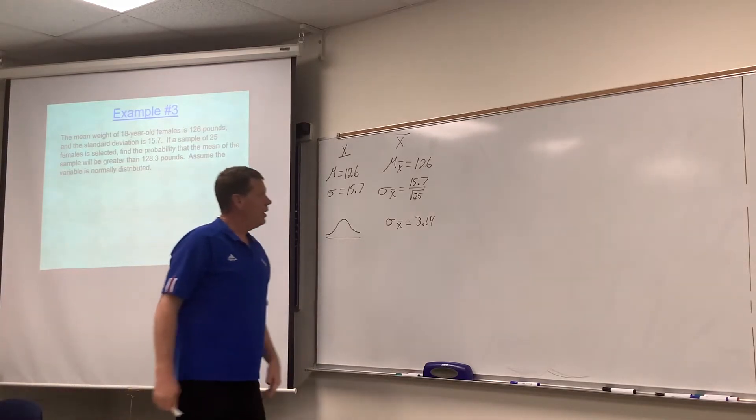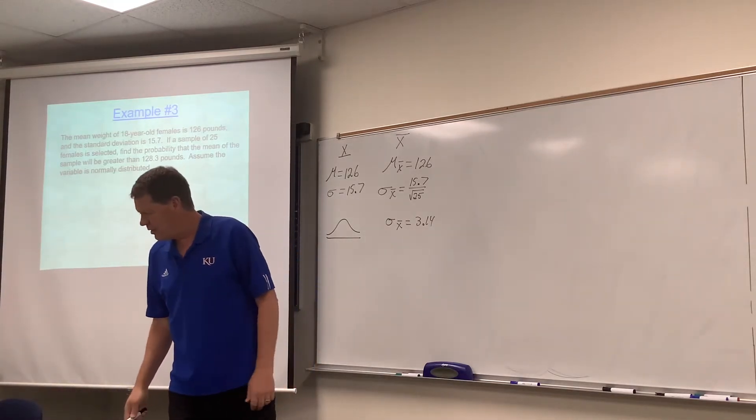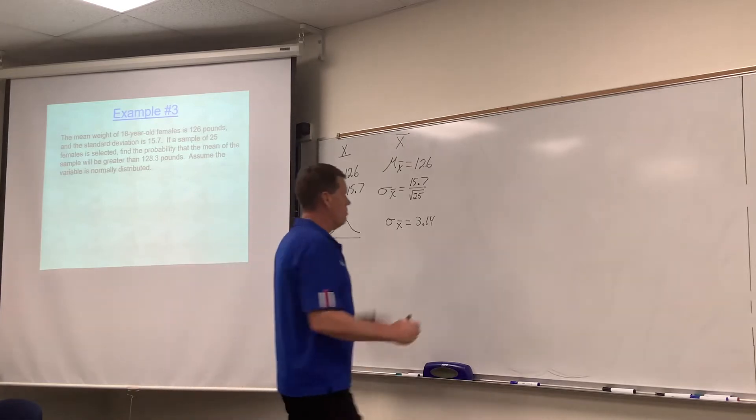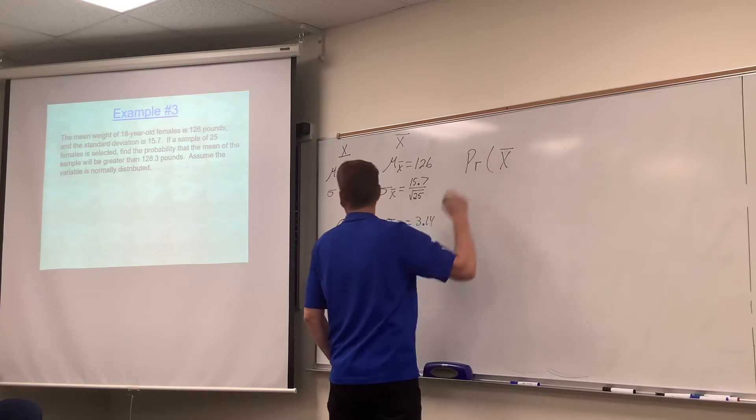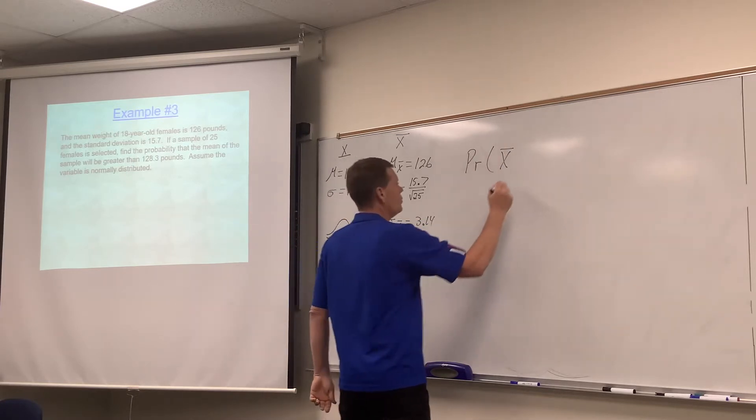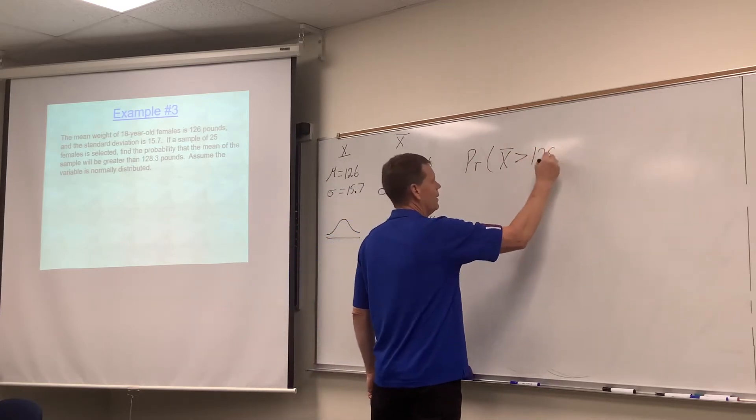Anyway, we're jumping over to X bar. Now let's go ahead and read the rest of the question. What's the probability that the mean of the sample, which means the symbol now is X bar, the variable, and it says greater than 128.3.